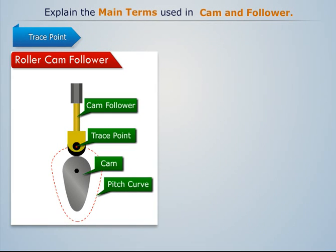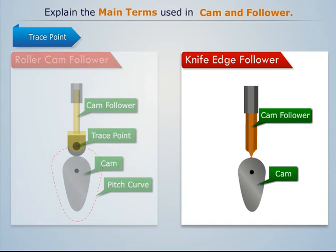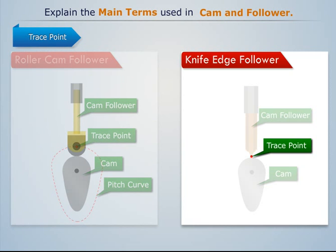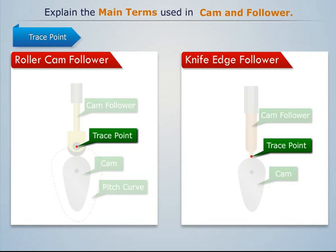For example, in the case of a knife edge follower, the knife edge represents the trace point. In a roller follower, the center of the roller represents the trace point.